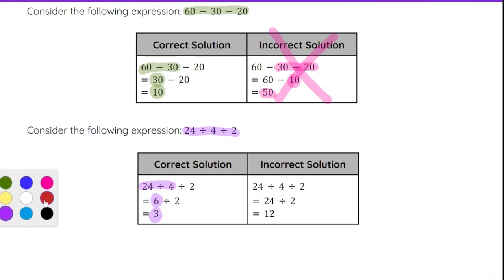Now some people will make the mistake of doing 24 ÷ 4 ÷ 2 by doing 4 ÷ 2 first. 4 ÷ 2 is going to give you 2. Then 24 ÷ 2 would be 12, and that would not be correct.